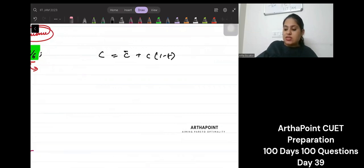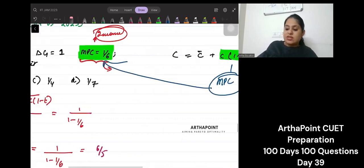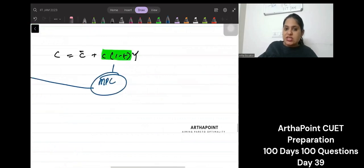Right? 1 minus ty, right? Please consider that this MPC out of income is given to you as 1 by 6. Don't consider it as MPC out of disposable income because it is not given like that.